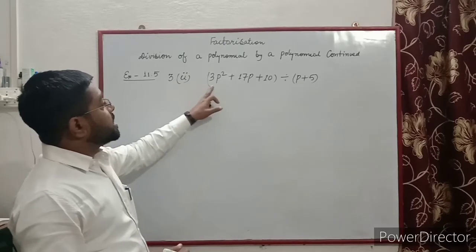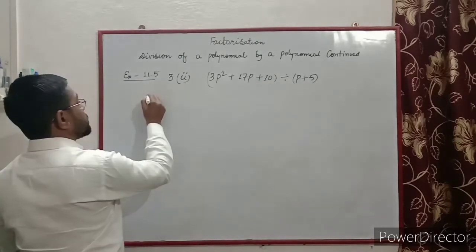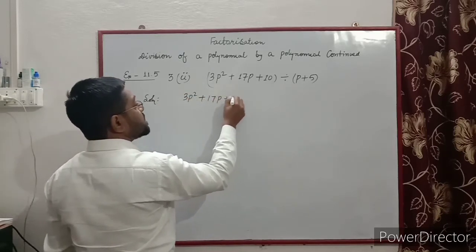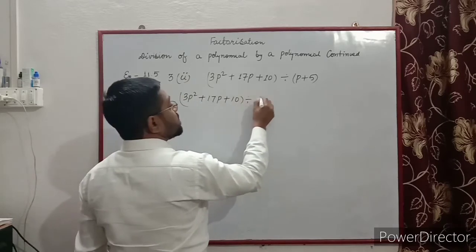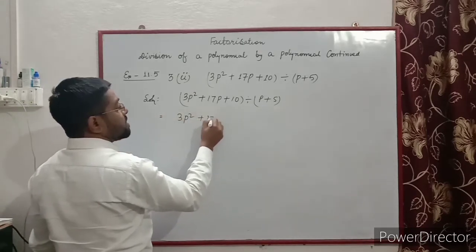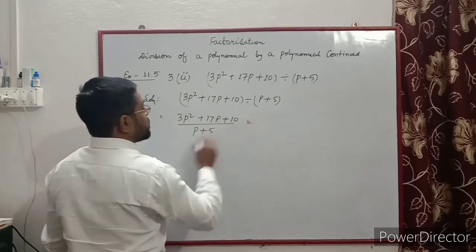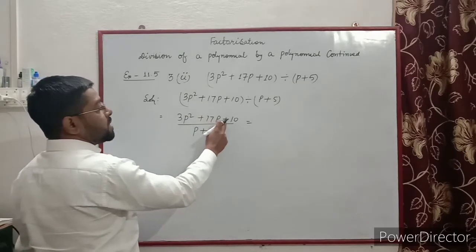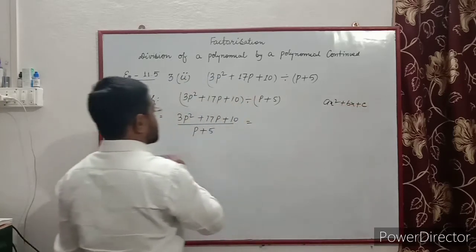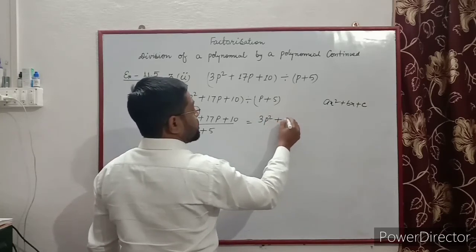Question number 3: (3p² + 17p + 10) divided by (p + 5). Solution: we write 3p² + 17p + 10 divided by (p + 5). It is in the form ax² + bx + c, so factorize first. We split the middle term: 3p² + 15p...